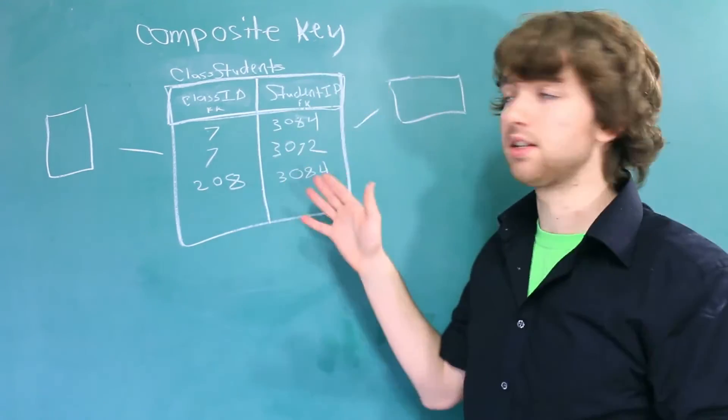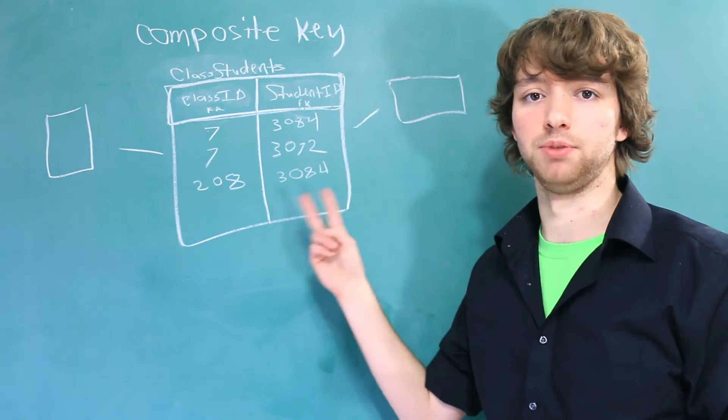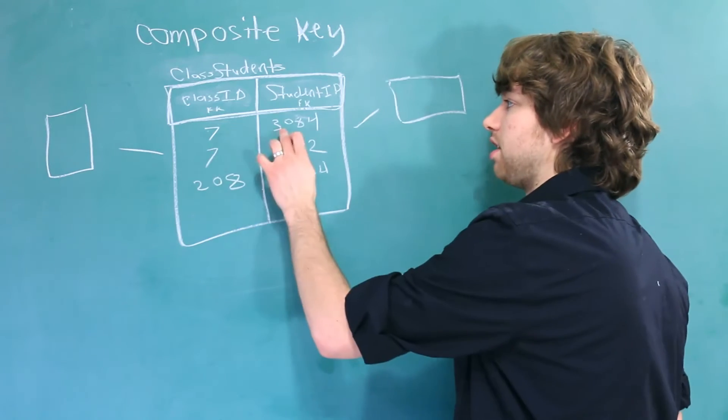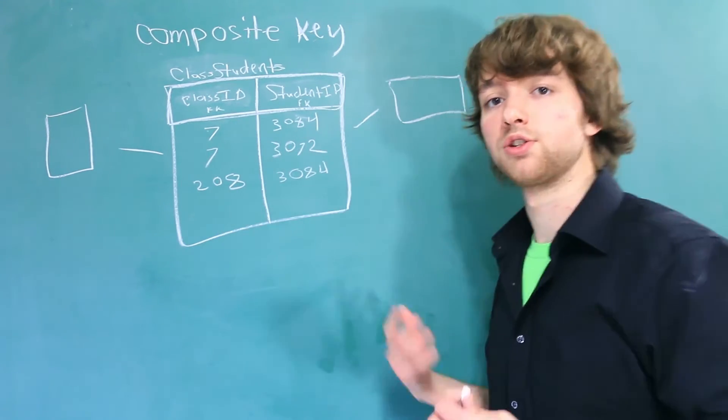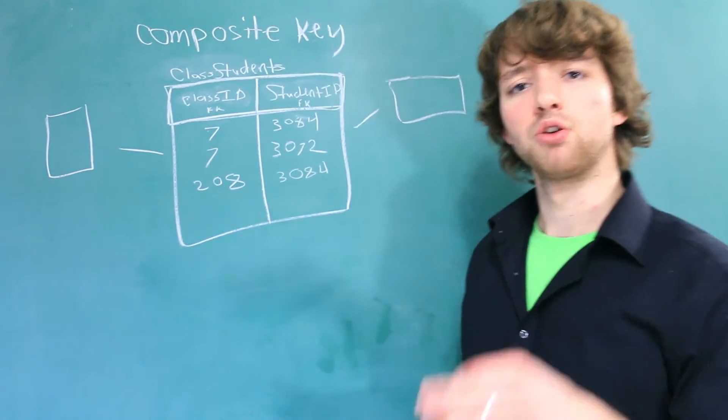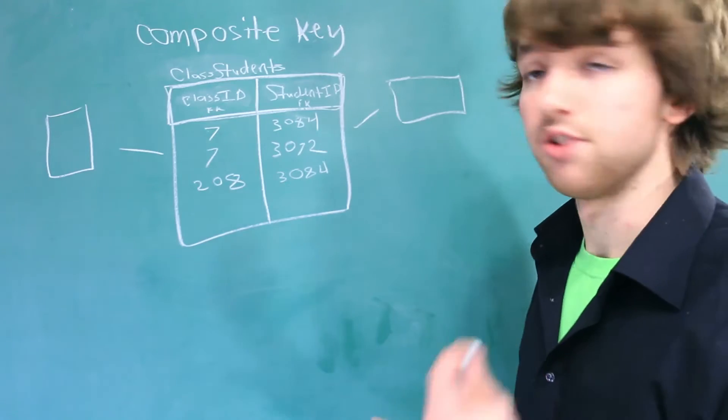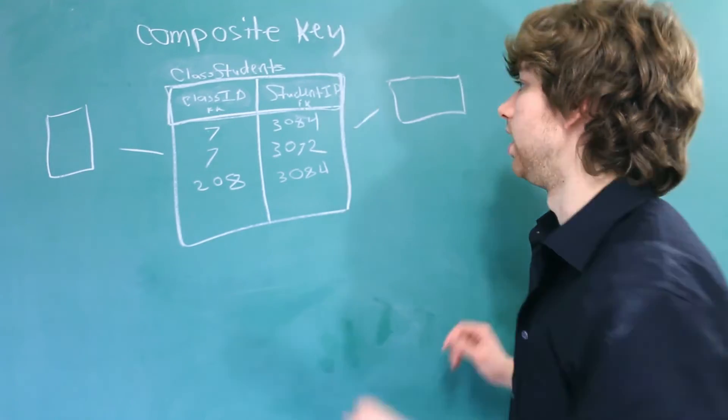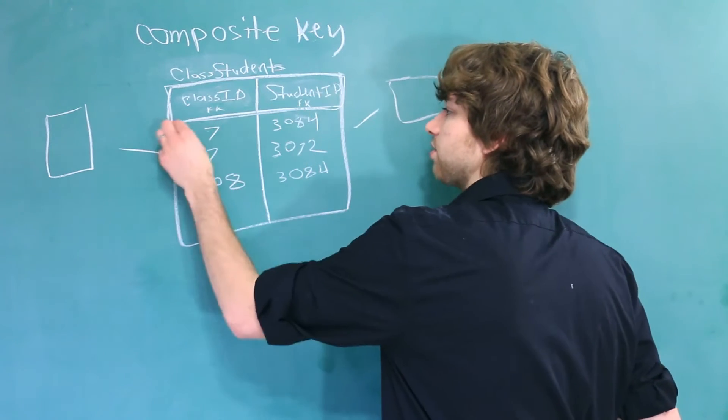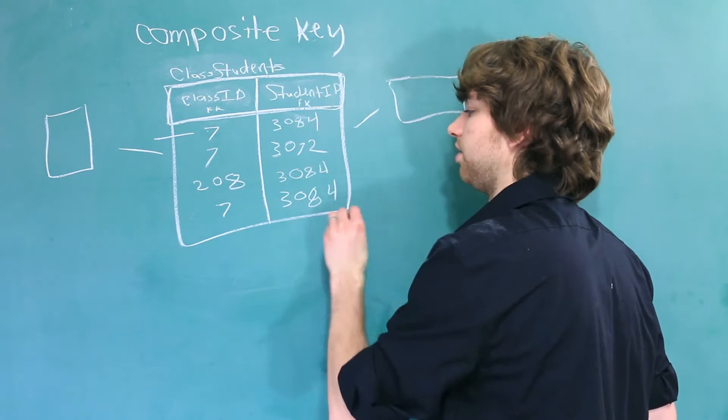If we made both of these IDs a composite key, the combination would have to be unique. So 7 and 3084 could only be in there one time. So then I could tell you, hey, grab me the row with the class ID of 7 and the student ID of 3084, and you would know it's always going to talk about this row. That's because we're not allowed to have repeating data. This would not work.